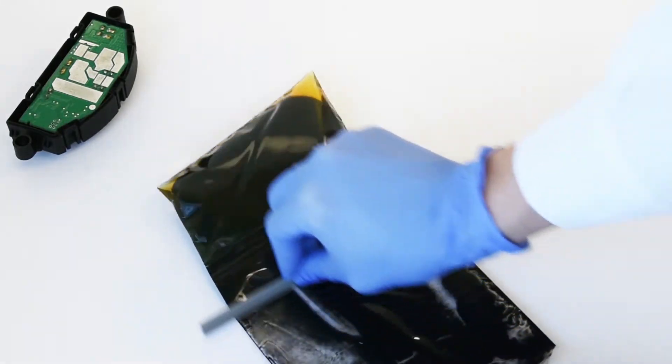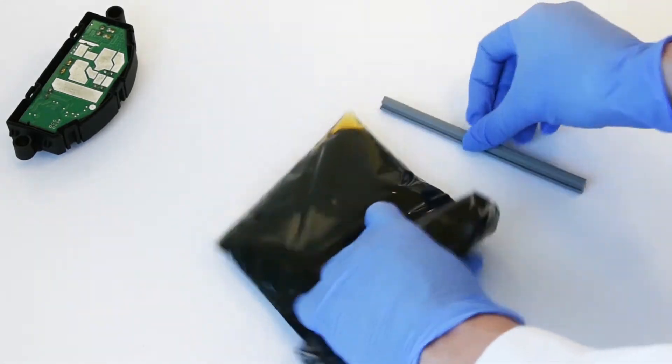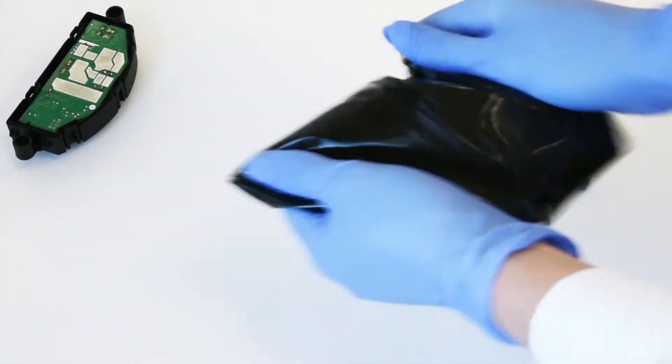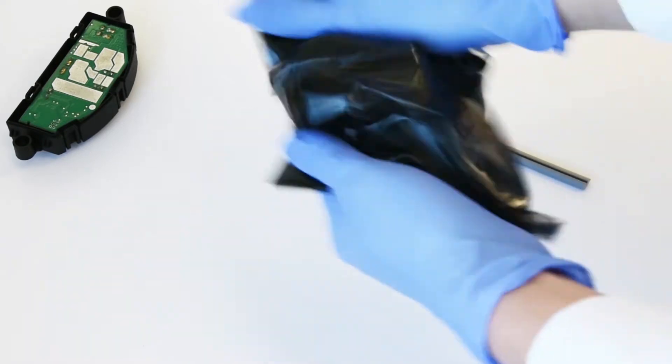Using the removed plastic clip, push all of the Part A into the Part B section and begin mixing by moving the resin around in the bag with your hands.